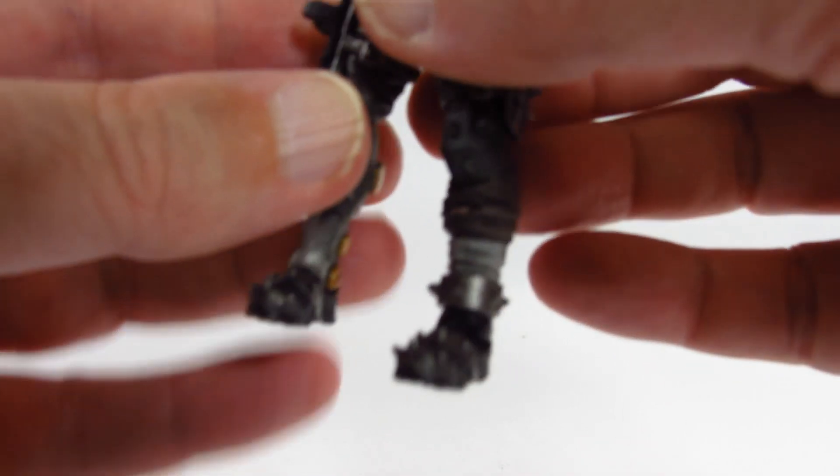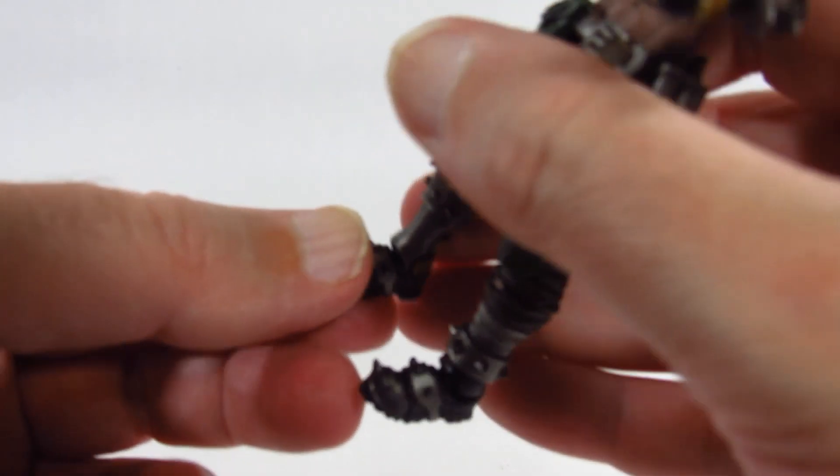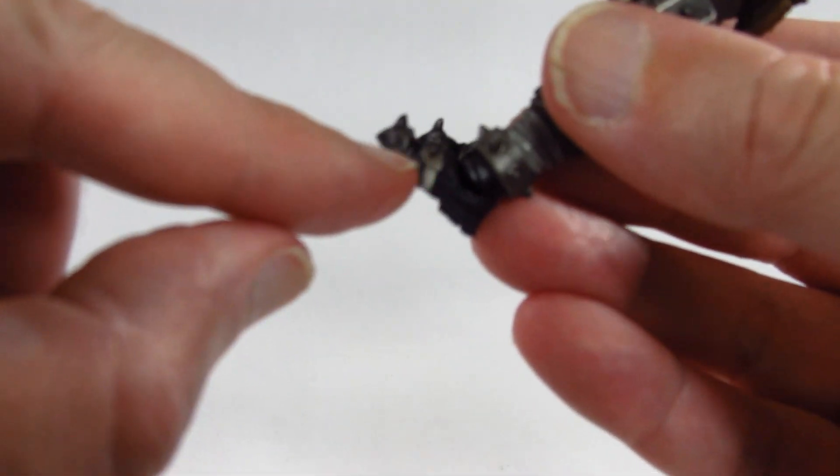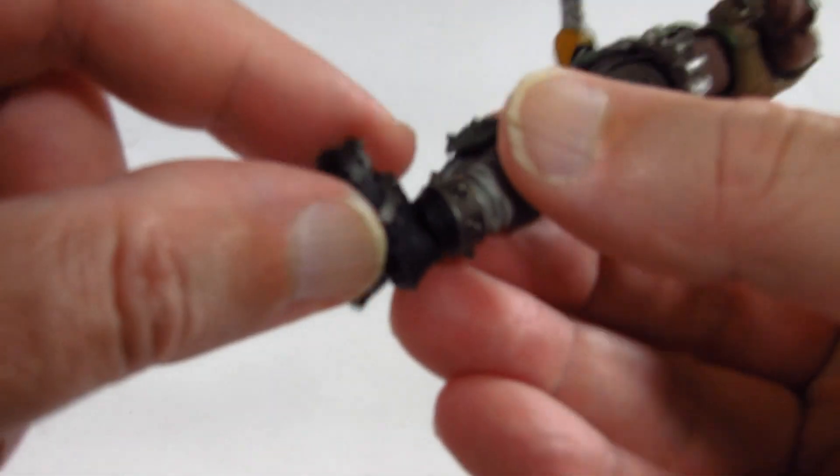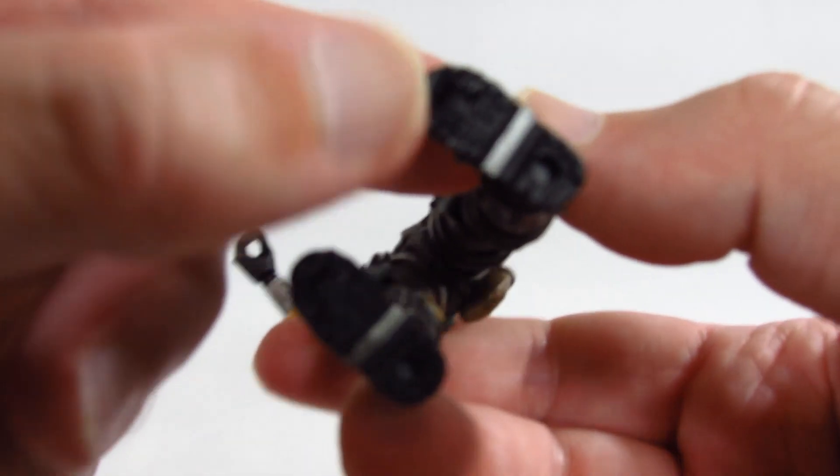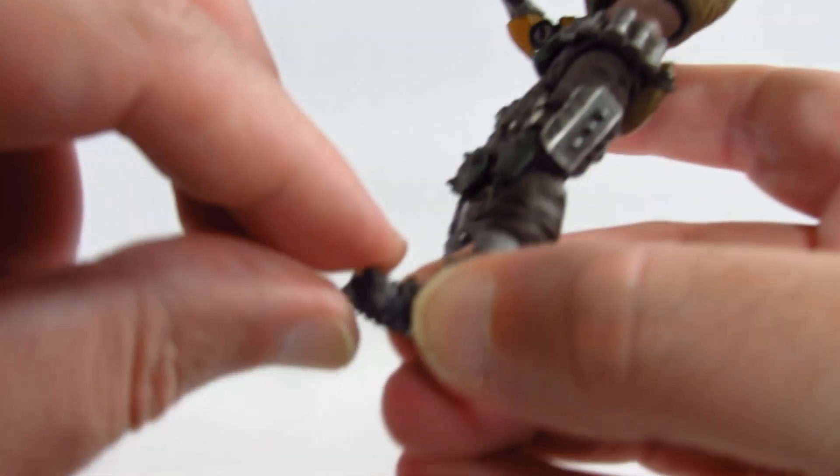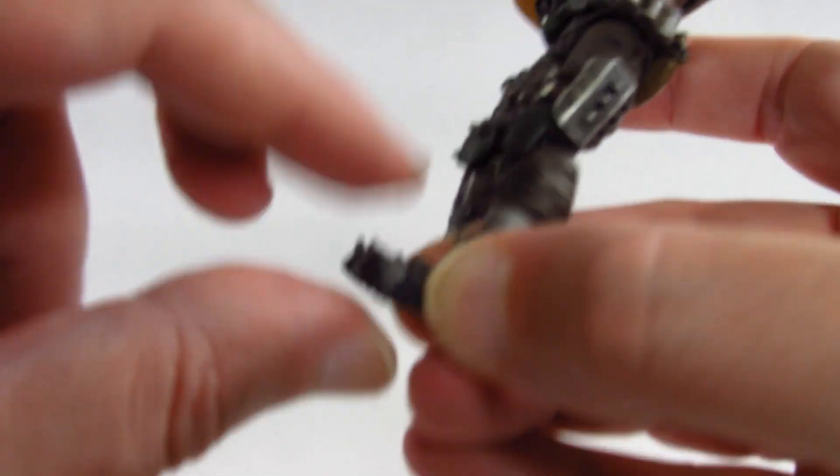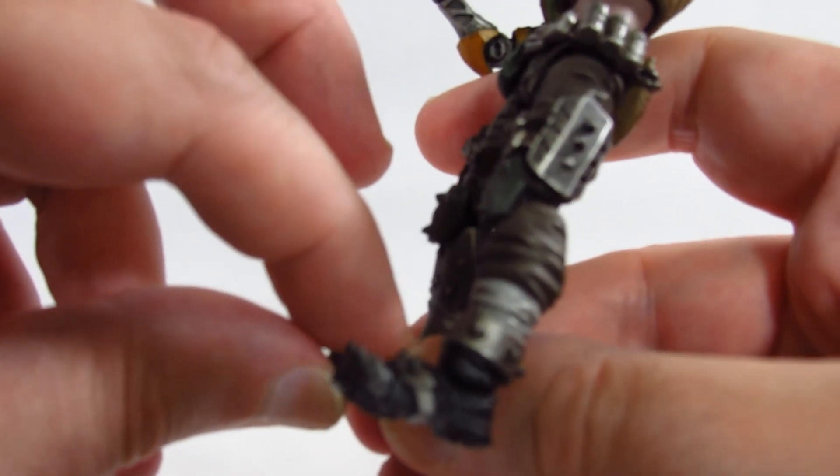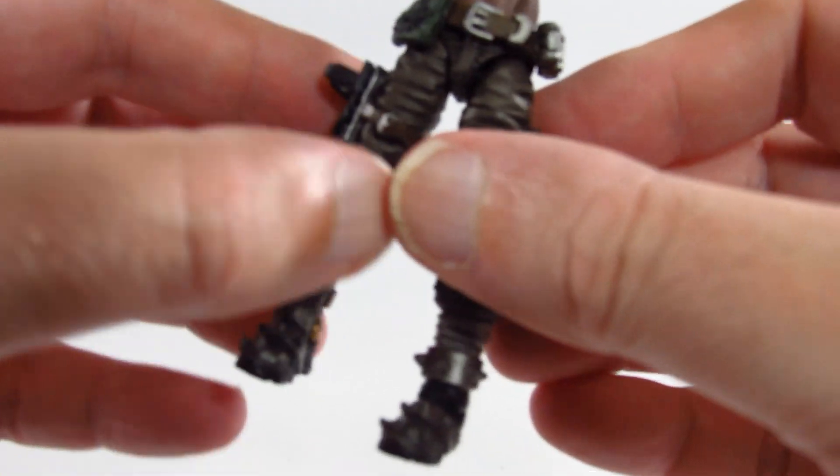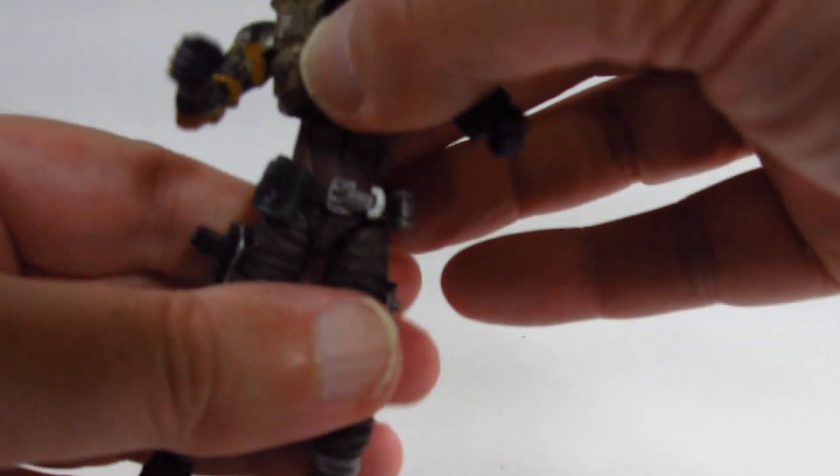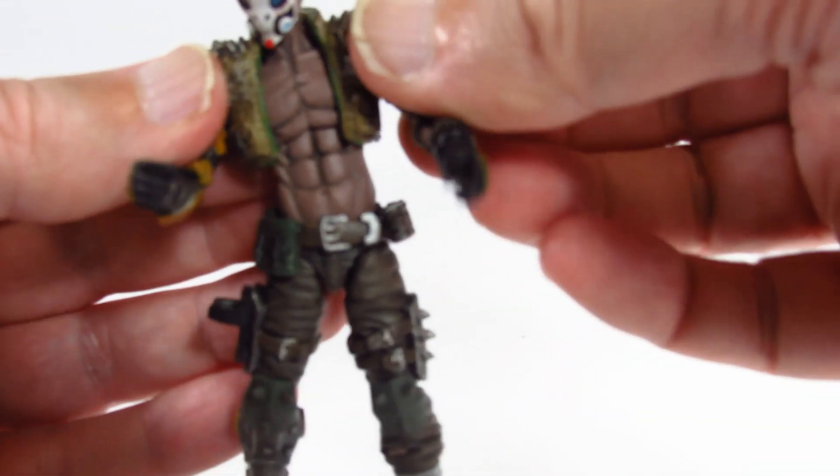Now with the toe articulation, I have not been able to get the toes to move. We can see the line where the two different plastic pieces are put together, but I just haven't been able to get it to move. And there's some sharp spikes there, so I'm not too worried about the toe articulation, but it would be nice if all the parts worked properly.